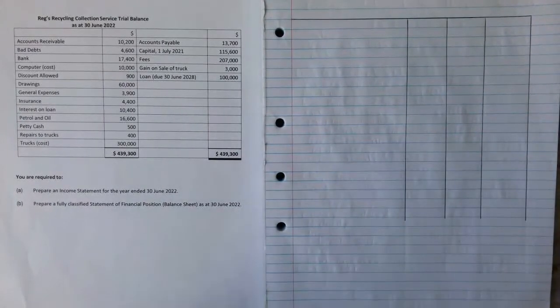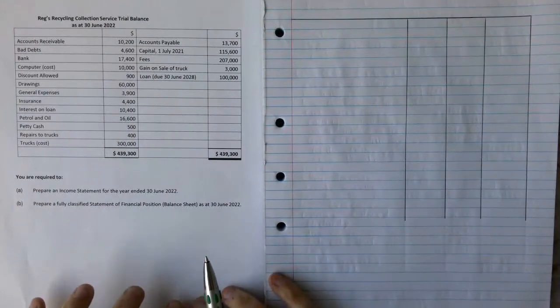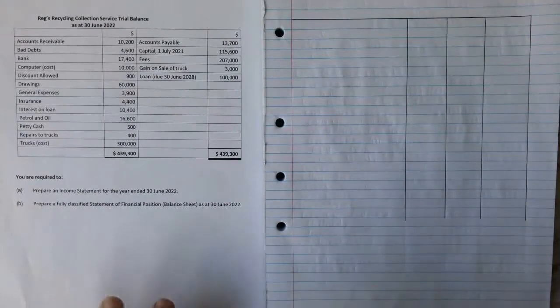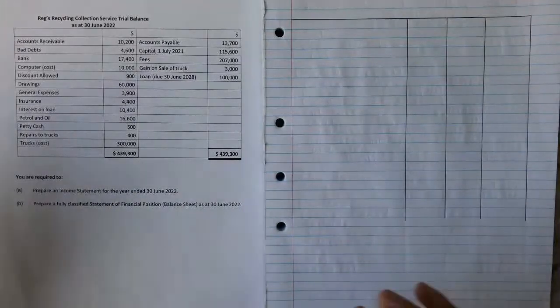First things first, we have all our accounts down on this left-hand side in the trial balance. What we're going to start by doing is I'm just going to quickly run through and identify what is an expense, what is an asset, what is an income, et cetera.